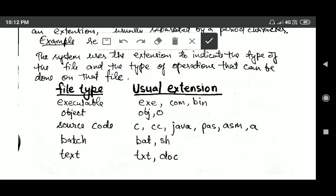Now let us see the various types of files and their usual extensions. If the type of file is executable, then its usual extension is exe, com, or bin. For object types of file, the usual extension is obj or o.